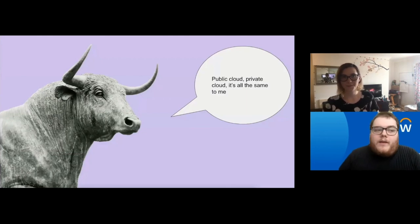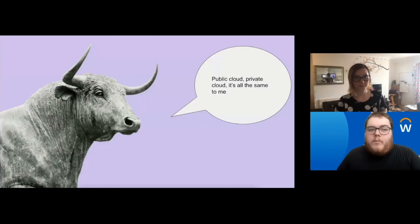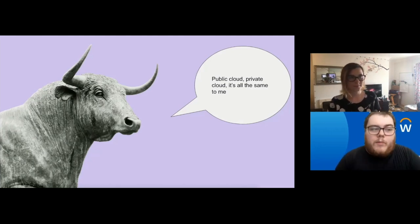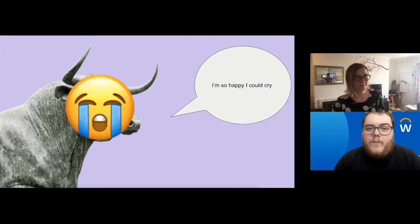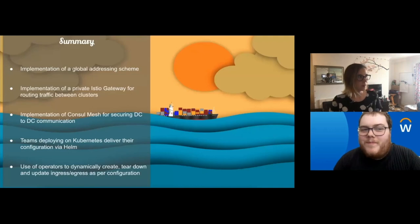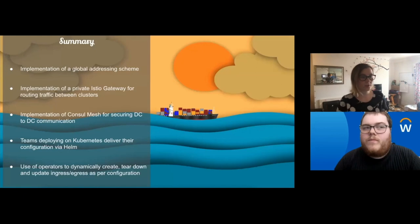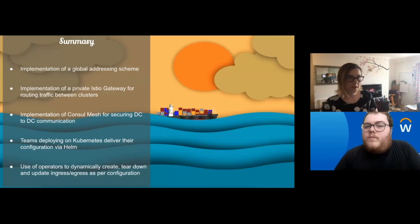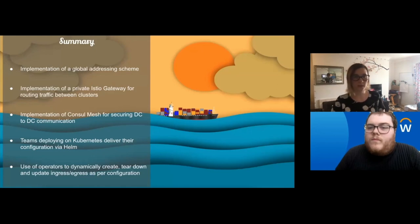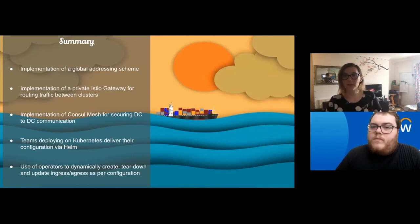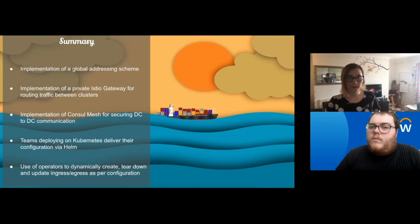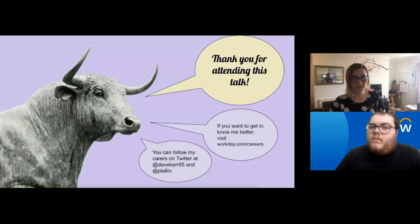Now the Ox can contact its family and friends regardless of which data center they live in — public cloud, private cloud, or even a cloud provider not yet supported — just by delivering a simple configuration. In summary, to implement secure cluster-to-cluster communication across data centers, we implemented a global addressing scheme with conventional DNS, a private Istio gateway for routing traffic between clusters, a Consul mesh for securing data center-to-data center communication, Helm charts for teams to deliver configuration, and operators to dynamically create, tear down, and update ingress and egress as required. Thank you.